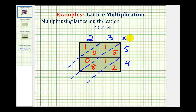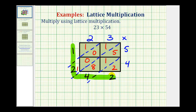Now to find the product, we actually find the sum of these diagonals. We'll start here at the bottom — we just have a two. For this diagonal, we have five plus one plus eight. That's going to be fourteen, so we put a four here and carry a one. Then we have one plus zero plus zero plus one, so that's two. And then here we just have one. So our product is 1,242.